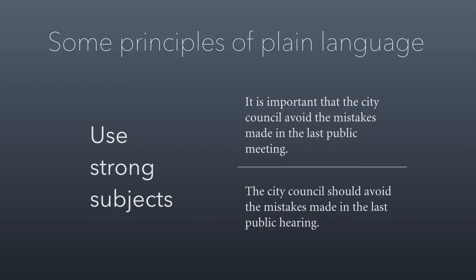So, use strong subjects. This is an extension of the third party problem. Sometimes we get really vague in the subject of a sentence. The subject of the sentence is the actor of the verb — whoever is engaged in the activity of the verb is the subject of the sentence. In this case, the subject on the top is the word 'it': 'It is important that the city council avoid the mistakes made in the last public meeting.' That's a really weak way to phrase something. We can improve it very simply by taking the city council — who's the real subject of that sentence, just hidden — and making them the subject: 'The city council should avoid the mistakes made in the last public hearing.' You'll notice you can also make the sentence noticeably shorter by using strong subjects rather than shoving the real subject into another part.